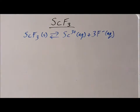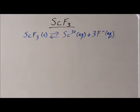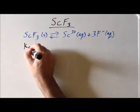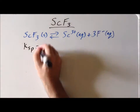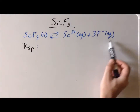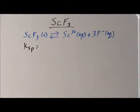So you notice one difference in this example compared to the previous examples is that in this salt, we have a three to one ratio, whereas in the previous videos, we had either a one to one or a two to one ratio. The next step, which we like to do, is to write out our equilibrium constant expression.